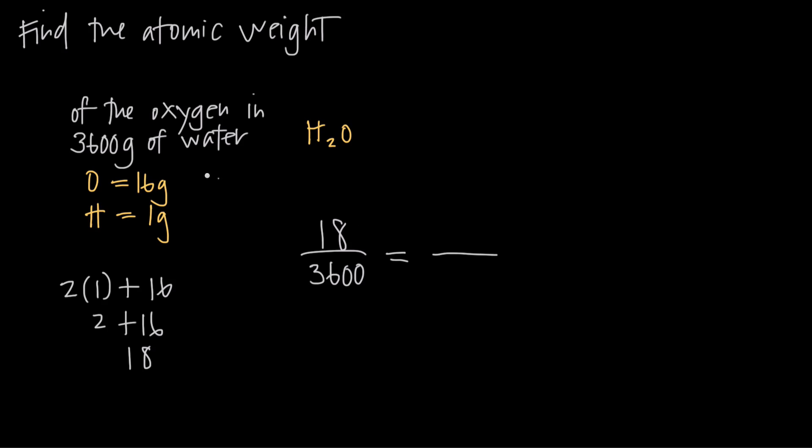What I'm looking for is the amount of oxygen in this total 3,600 here. That I don't know yet. So I'm going to put X in its place there. What I do know is the oxygen in one molecule. Remember, there's one oxygen in an H2O molecule here, and I know that one oxygen weighs 16, so I'm going to put 16 here.